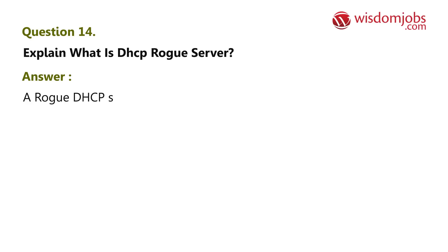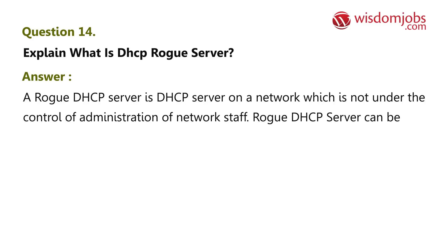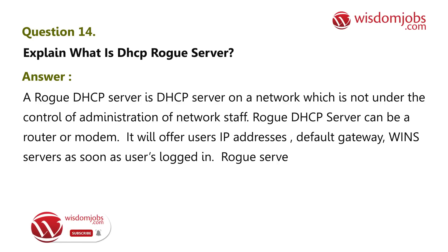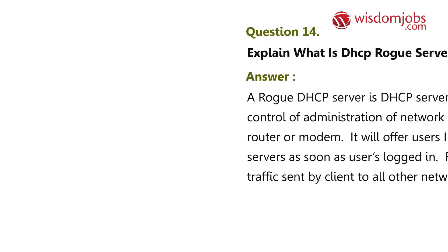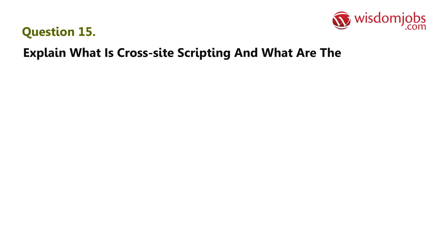Question 14: Explain what is a DHCP rogue server. Answer: A rogue DHCP server is a DHCP server on a network that is not under the control of the network administration staff. It can be a router or modem. It will offer users IP addresses and default gateway. As soon as users log in, the rogue server can sniff all traffic sent by the client to all other networks.